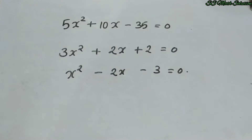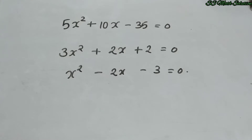Now we can check some examples of a quadratic equation. These are examples: 5x² + 10x − 35 = 0; 3x² + 2x + 2 = 0; and x² − 2x − 3 = 0. These are all examples of quadratic equations.